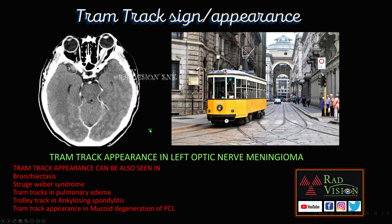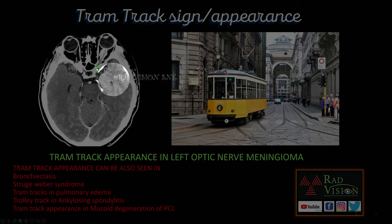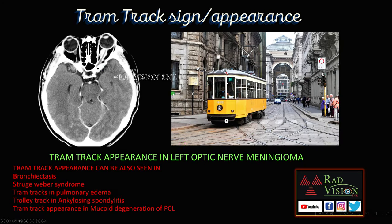Next, the tram track sign is classically seen in optic nerve meningioma. Remember also that tram track appearance can be seen in bronchiectasis, Sturge-Weber syndrome, pulmonary edema, ankylosing spondylitis, and mucoid degeneration in PCL.